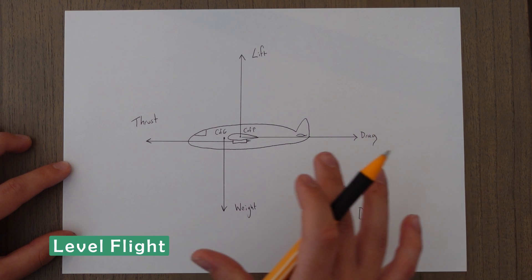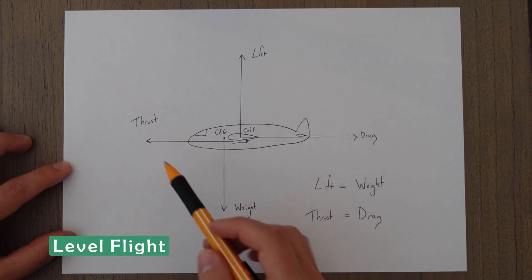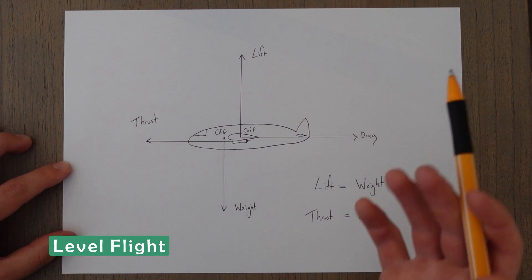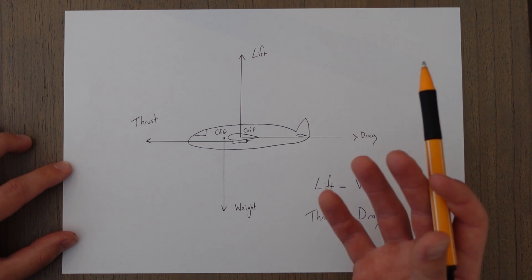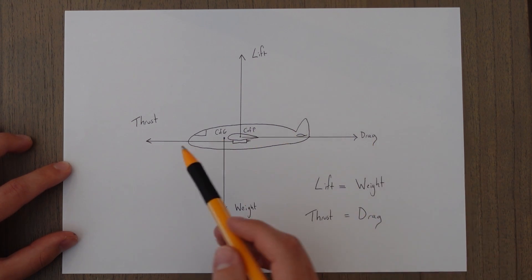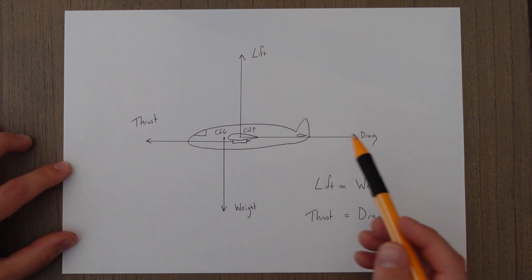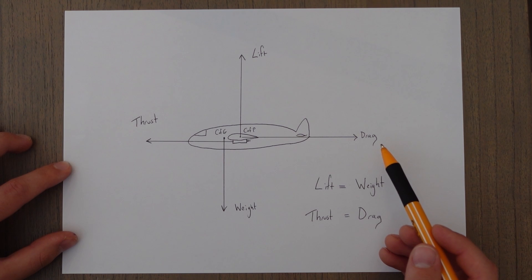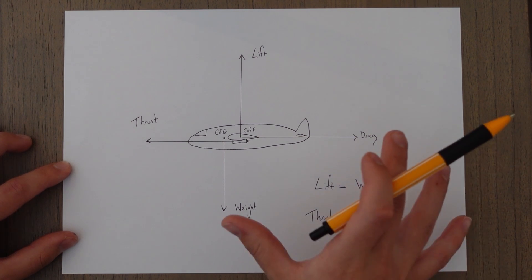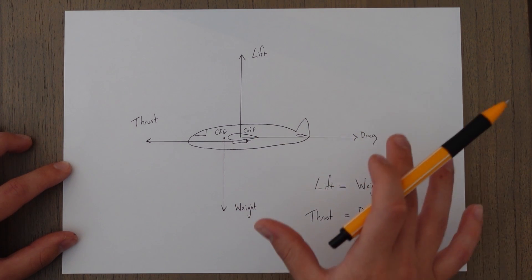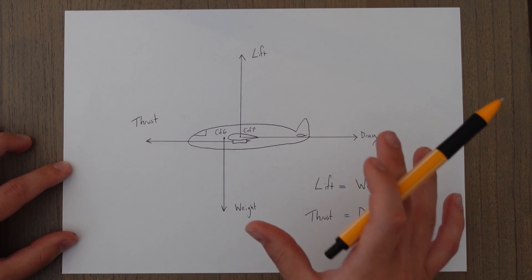I'm going to break this class down into two parts, and in this first part we're going to be looking at level flight and climbing. In level flight, the four forces are perfectly balanced if we're assuming the aircraft is not accelerating. Lift is equal to weight and thrust is equal to drag. This is our starting point for all things when we're talking about flight physics.